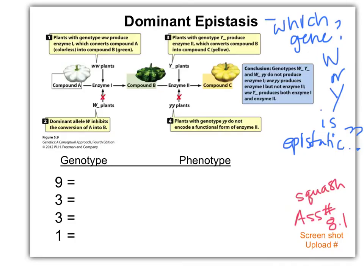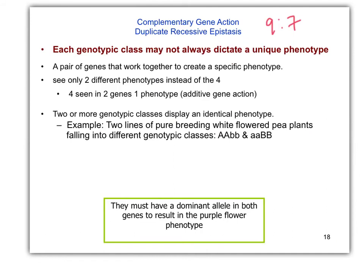I'm going to have you answer this question. Screenshot and upload under squash assignment 8.1 on tomorrow's date, the 17th. Answer which gene, W or Y, is epistatic. Fill out the chart with genotype and phenotype. Understand the molecular reasons for why these phenotypes turn out this way. Do a screenshot, do an upload. Hit pause and do that, then come back and finish this lecture.